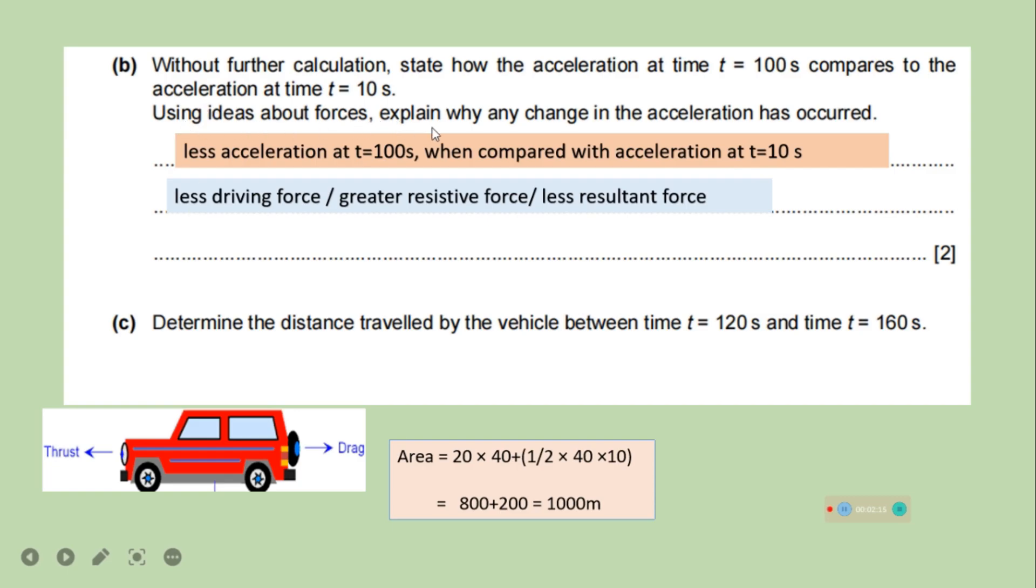Using ideas about forces, explain why any change in the acceleration has occurred. Now you can understand that if the car is moving toward left, the thrust force or the driving force acting toward left, the drag force will oppose and it will act against the direction of motion. So what happens? What is the reason for this reduced acceleration? Less driving force could be a reason or the greater drag force or air resistance. And resultant force is the difference of these two forces. So if less driving force and greater resistive force, it results in less resultant force. So this could be a reason why the change in acceleration has occurred.